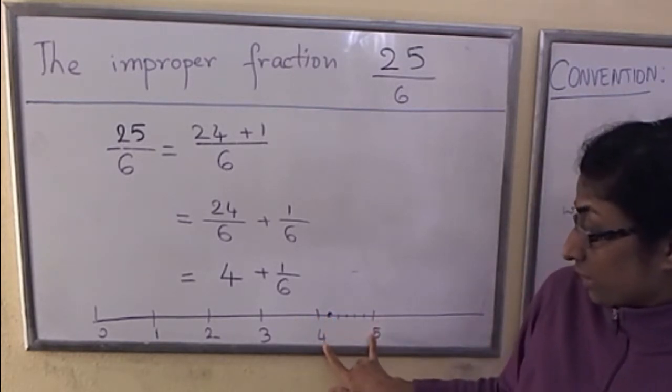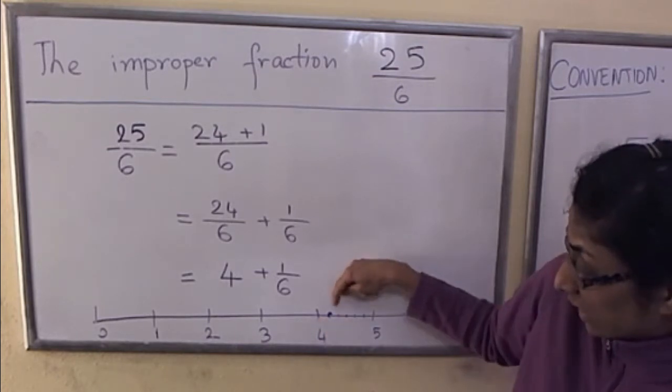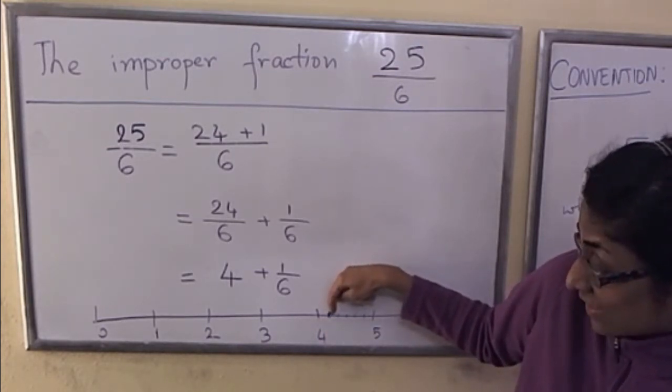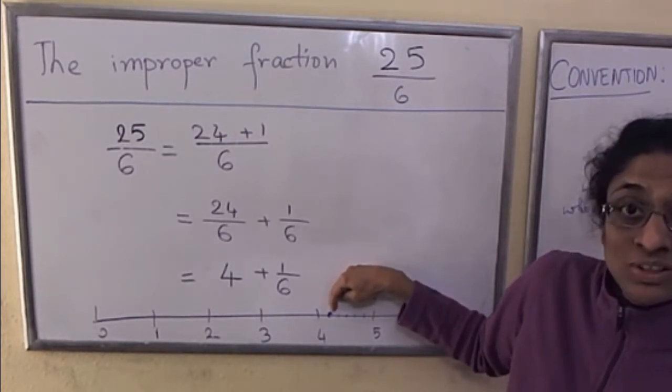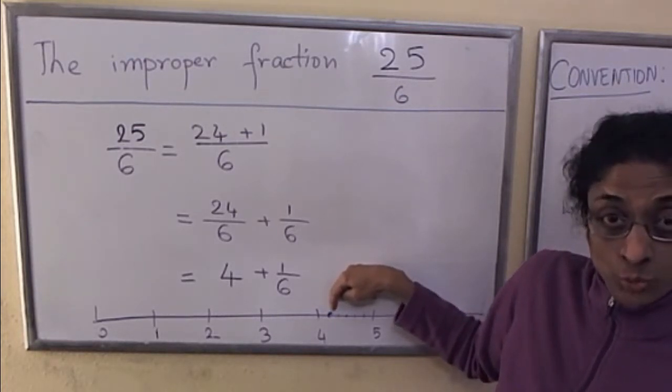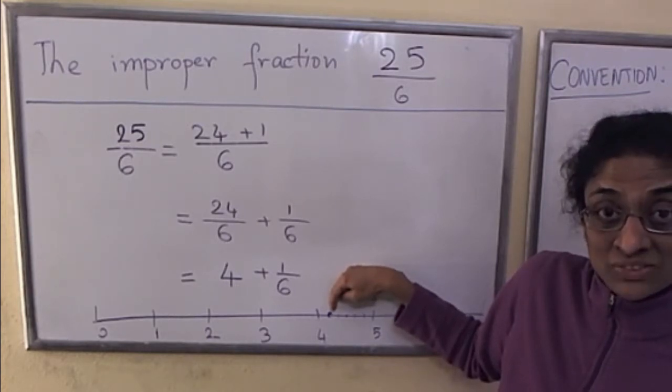Looks like 25 over 6 would be to the right of 4. If we cut up this segment into 6 equal pieces, the first tick mark to the right of 4 is in fact 25 over 6. So we are able to visually see what 25 over 6 is.